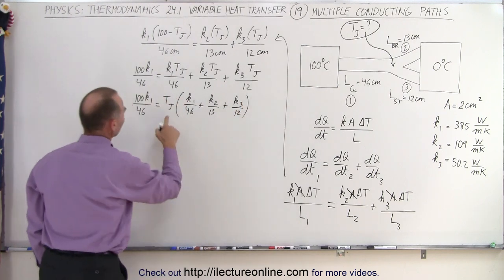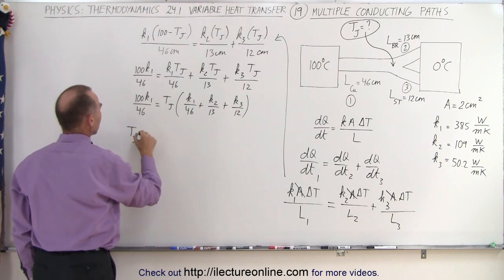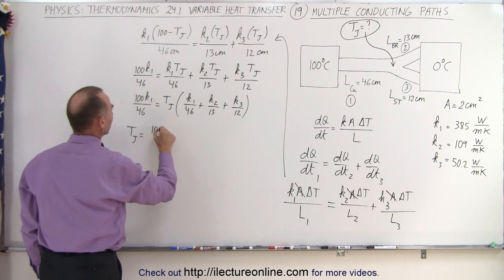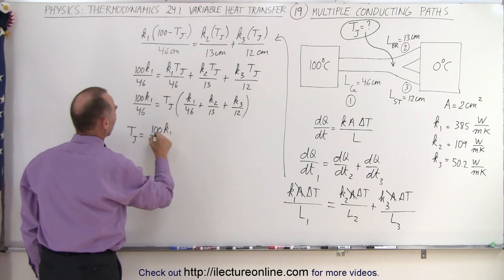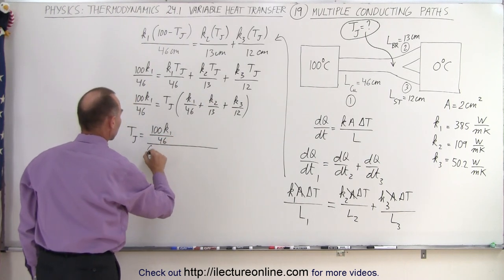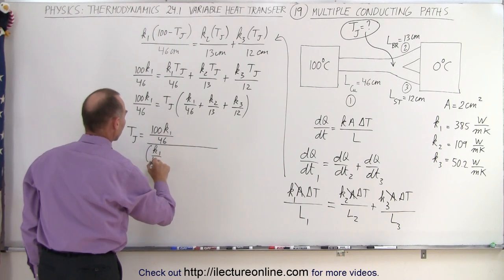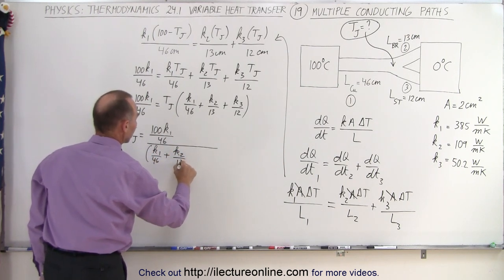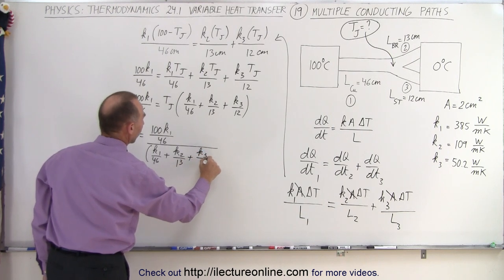Solving for T_J, we get T_J equals 100 K1 over 46, divided by the quantity K1 over 46 plus K2 over 13 plus K3 over 12.